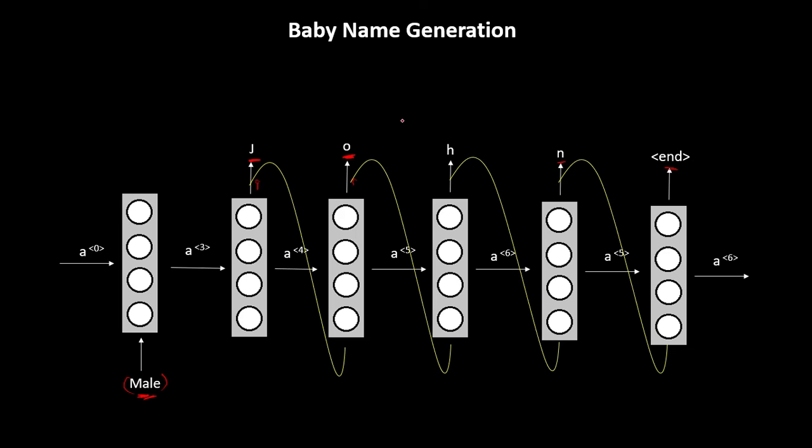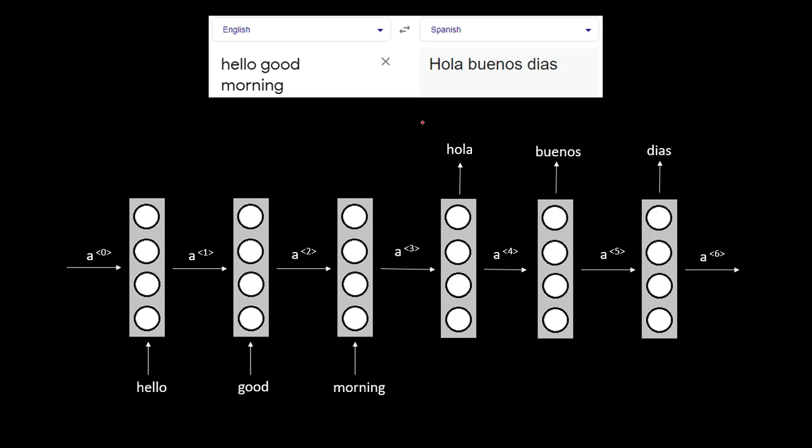Now there can be another application which might have variable input length and variable output length and both these are not same. For example, in the English to Spanish translation the input English sentence can be of any length and the output Spanish sentence can also be of any length.